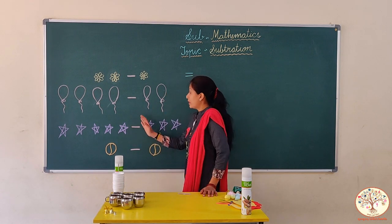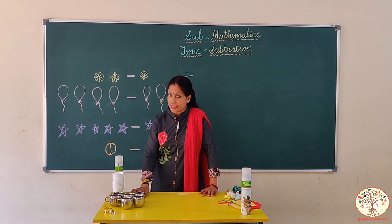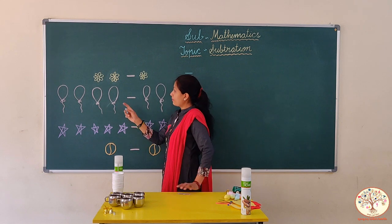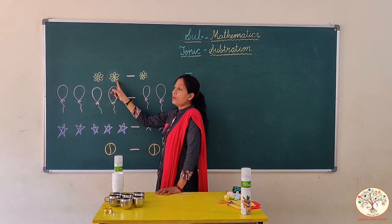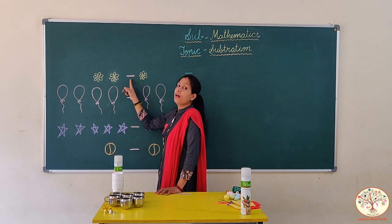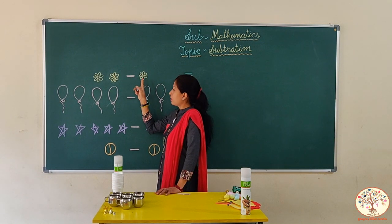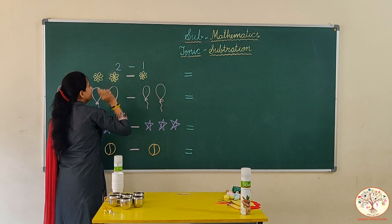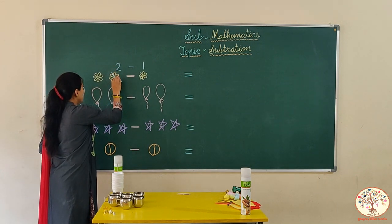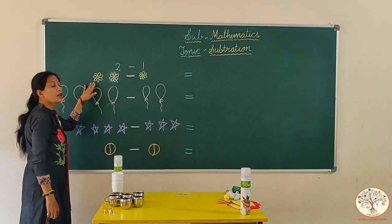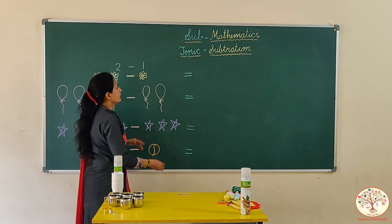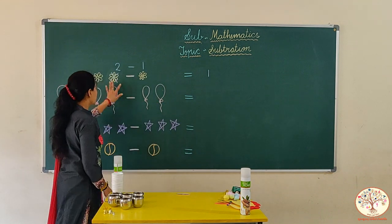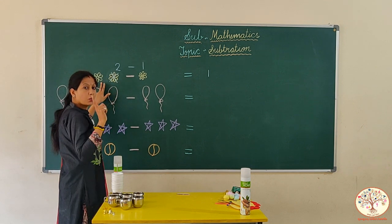Now, we will do subtraction with the help of these pictures. Look here — what are these? These are flowers. How many flowers? One, two — two flowers. This is the symbol of minus. Minus one flower. Two minus one is equal to one. If I take away one flower, how many flowers are left? Only one flower. Two minus one equals one. Toh humare paas only one flower rehega.